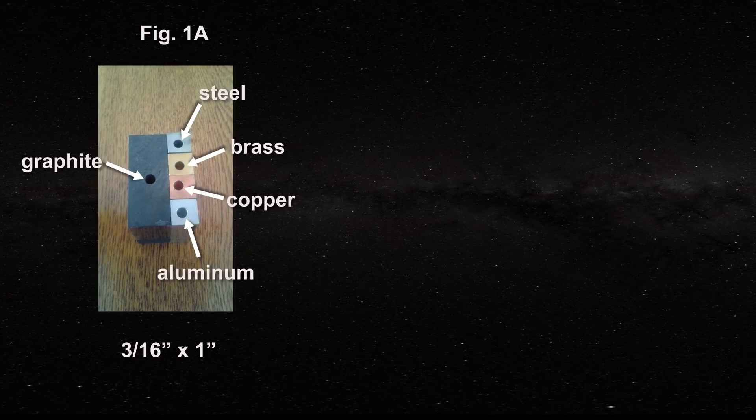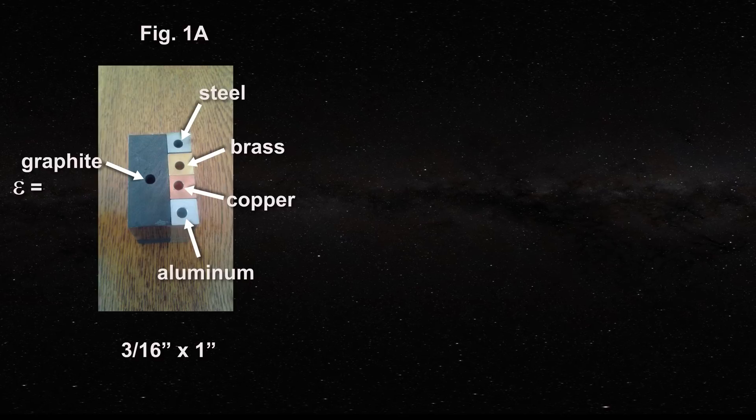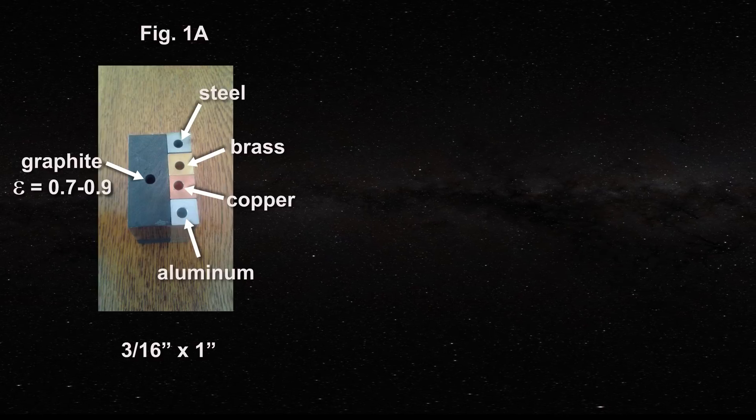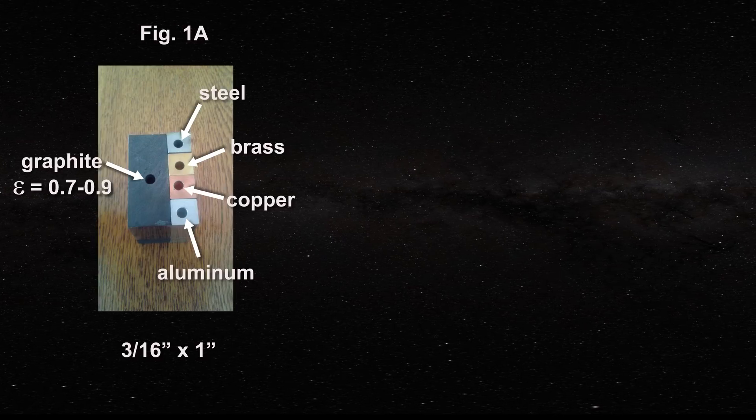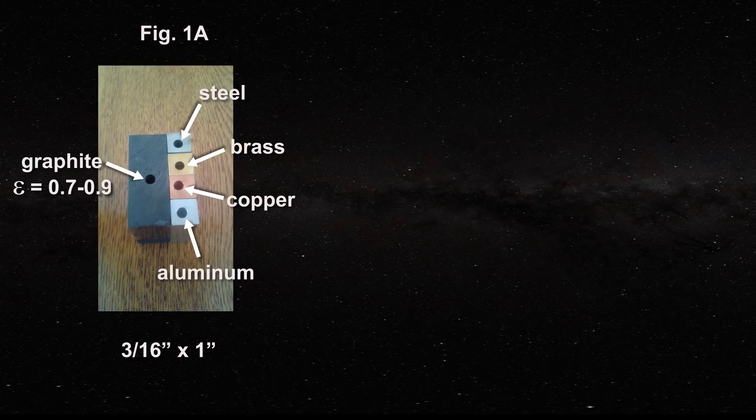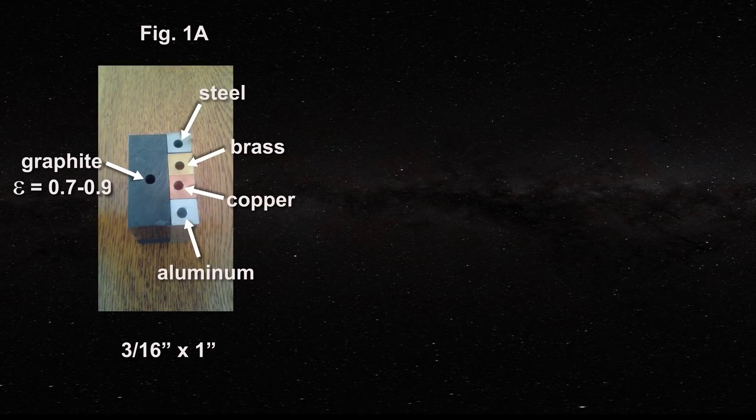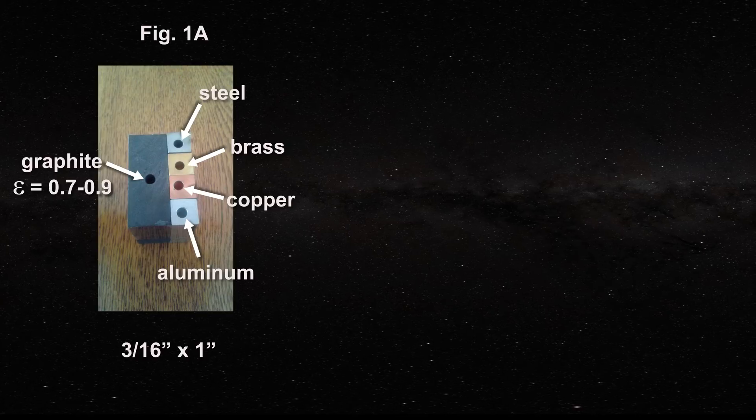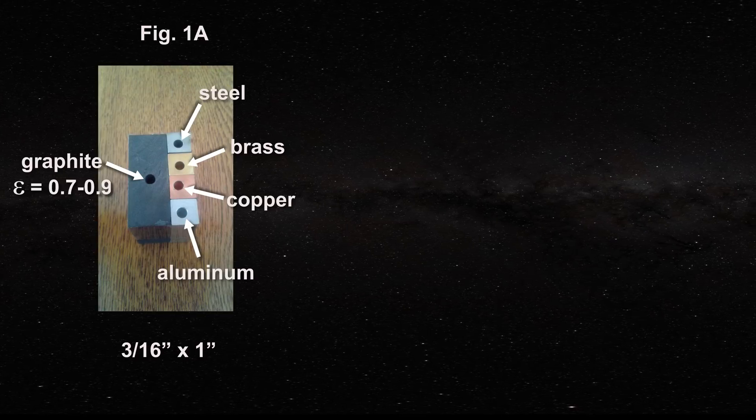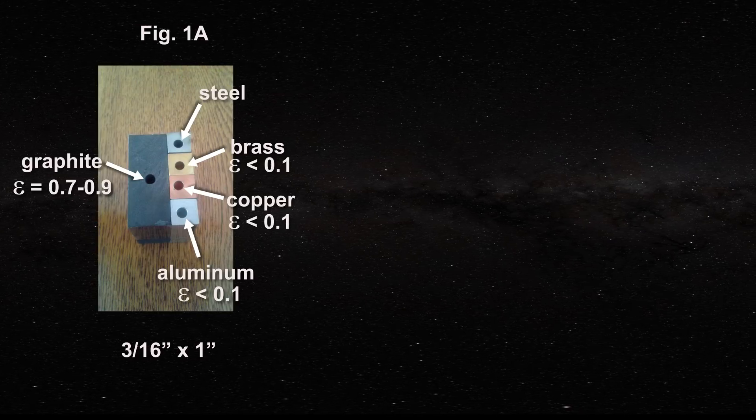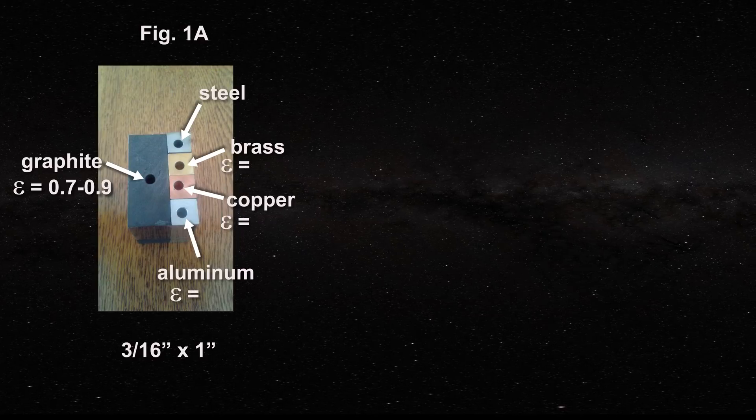Graphite for instance should have an emissivity of about 0.7 to 0.9 in the infrared depending on its source. This varies with mines where it was obtained. The aluminum, brass and copper holes should be very good reflectors with an emissivity of less than 0.1 and perhaps even as low as 0.03.